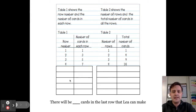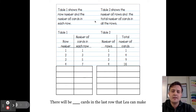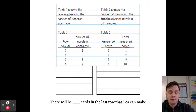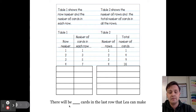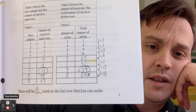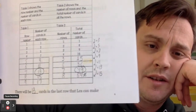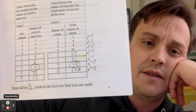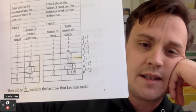Next we're going to extend the tables. Table one shows the number of cards in each row and table two shows the total number of cards in all rows. Go ahead and extend the tables, then see if you can answer: there will be blank cards in the last row that Leah can make. Here's my work — in table one the pattern adds two each time, so the number of cards per row is 1, 3, 5, 7, 9, 11, 13, 15, 17.